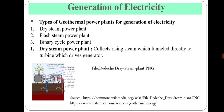Now, generation of electricity. There are three types of geothermal power plants for generation of electricity: first is dry steam power plant, second is flash steam power plant, and third is binary cycle power plant. We will see each one by one.